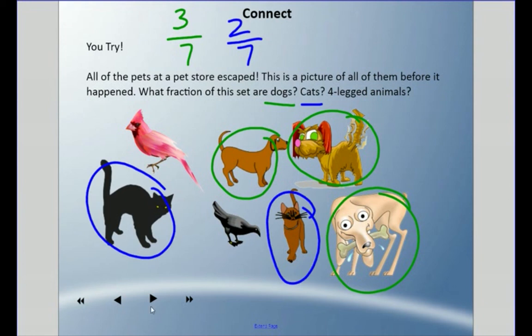And then lastly, how many of these are four-legged animals? Well, cats and dogs are four-legged animals. These birds are not four-legged animals. So I go one, two, three, four, five. So five-sevenths of all these pets are four-legged animals.